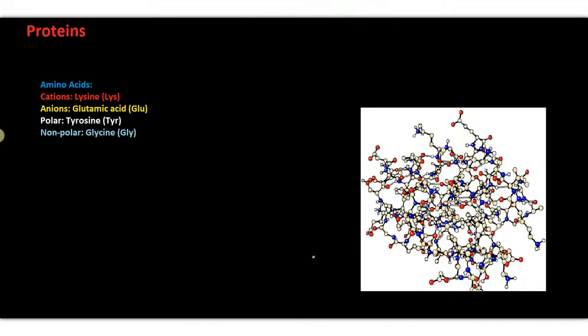In amino acids, there are amino acids that have negative charges—they are anions. There are amino acids that have positive charges—they are cations. And then there are polar amino acids and non-polar amino acids.